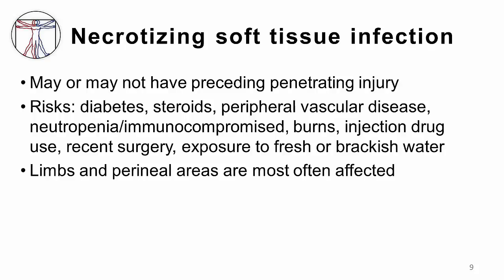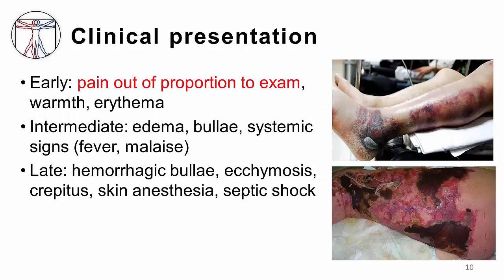Fresh or salt water exposures may predispose to necrotizing infections from water-dwelling organisms. Peripheral vascular disease may influence risk due to lack of a robust blood supply to affected tissues. However, in many cases, there is no identifiable reason for the infection. The most commonly affected areas are the limbs and the perineal areas. Early in the course of the disease, necrotizing soft tissue infection may look very much like cellulitis, but patients will often report severe pain in the affected area. One classic description of early disease is pain out of proportion to exam.